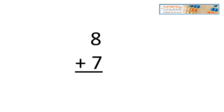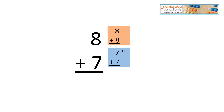Go ahead and decide in your head what double you would use to solve this problem. We'll start off with seven plus seven — we know we're one under, plus one: 14 and one would be 15. If you use eight plus eight, we know that we're one over, so we'd subtract — eight and eight minus one. Regardless of which one you use, the answer is 15.